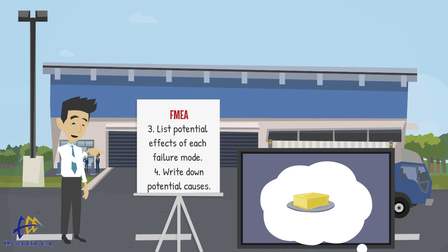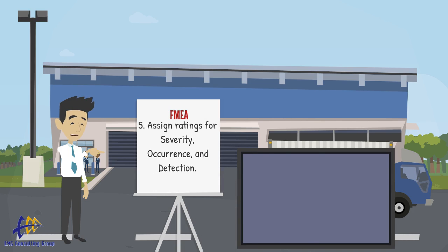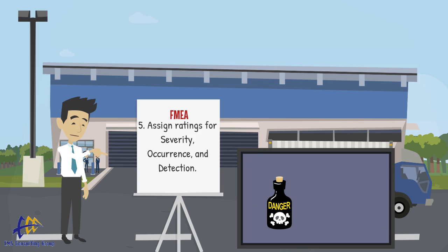After this, we assign ratings for severity, occurrence, and detection for each effect on a scale of 1 to 10. Severity is a measure of how serious the effect is. For example, if we have to scrap the cake and start over, we're losing time and money — but it's not as serious as an effect like food poisoning.